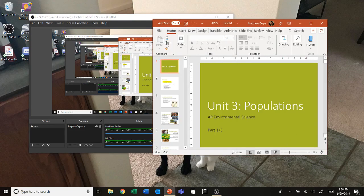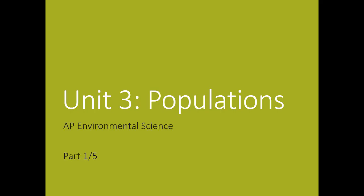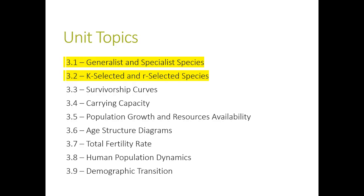Welcome to part one of five for unit three population notes. In this video we're going to look at generalist and specialist species, which is hopefully a review, as we talked about those when we were discussing biodiversity. We're also going to look at k and r selected species.